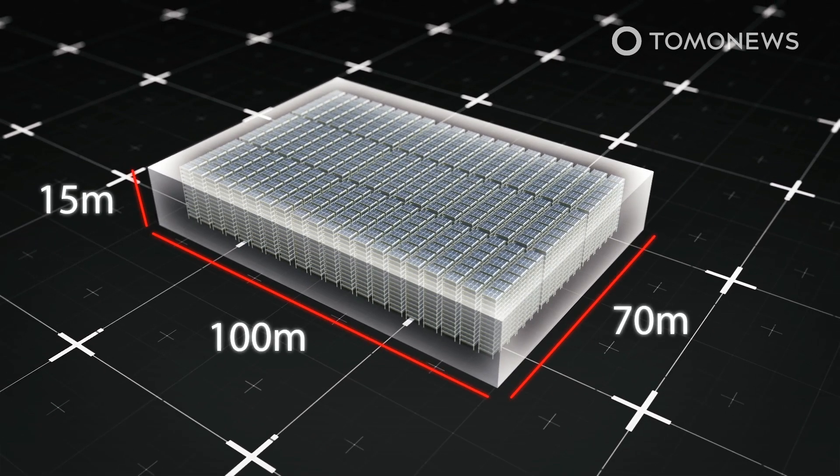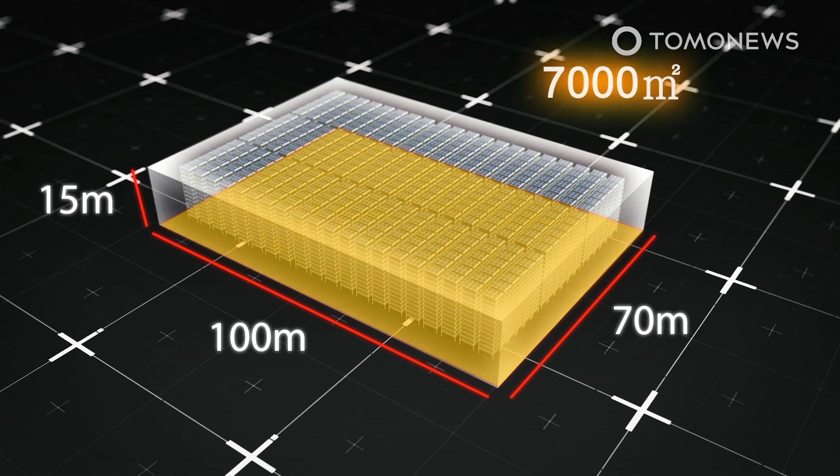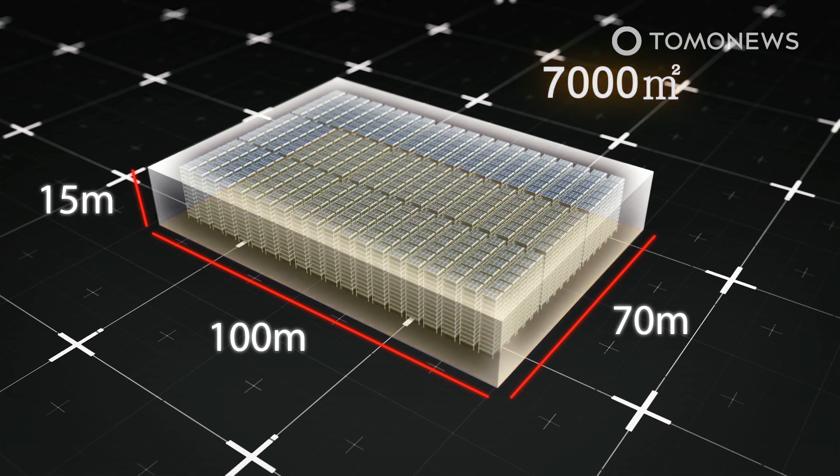The new Nordic Harvest Vertical Farm stands 14 layers high in a 7,000 square meter facility that's around four stories high.